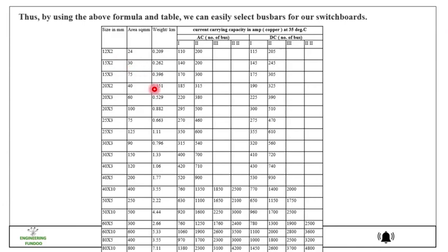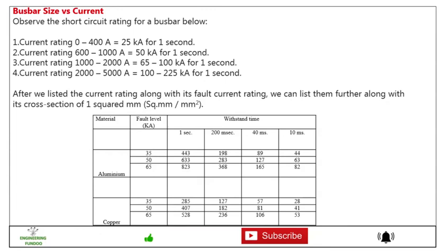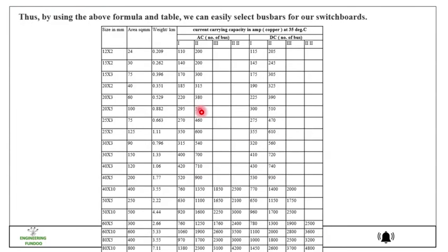And by using the above formula and table we can also easily select the busbar for our switchboard. Let's say you required, if we go back here you can see, let's say 89 square mm we need. So here for 89 square mm we can select this 90 mm area. This is 30 mm by 3 mm cross section size.